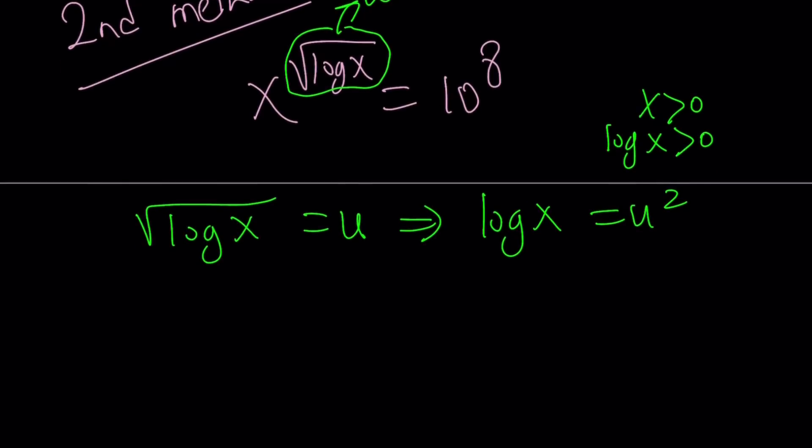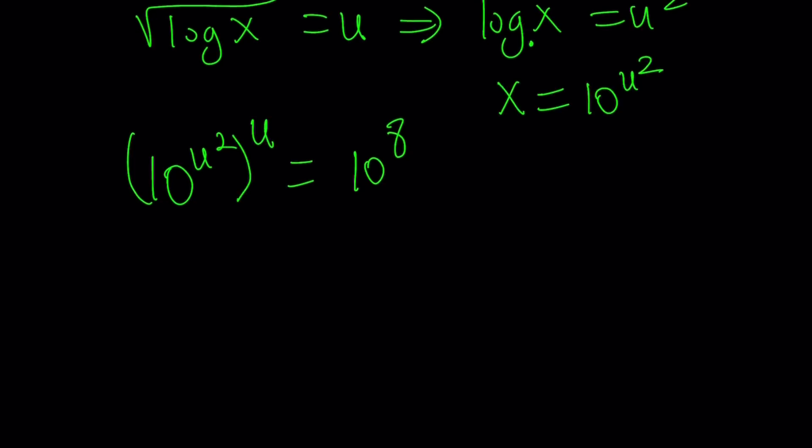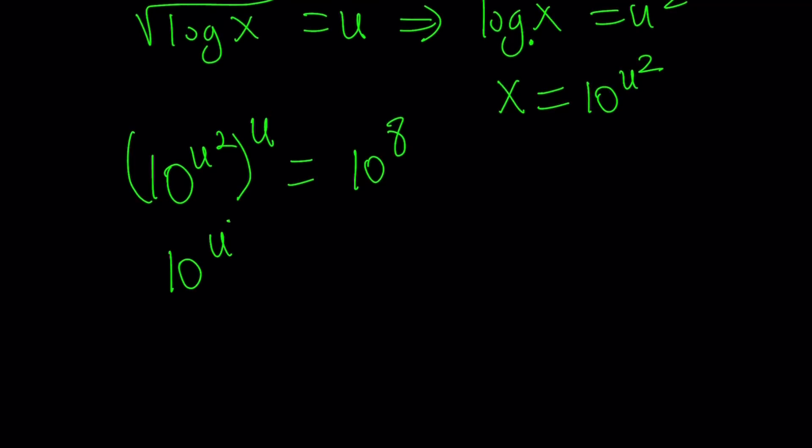Now, how do we solve for x, though? Well, you replace square root of log x with u. You got this. So what about x? By using the definition of logs again, x can be written as 10 to the power u squared. Now, let's go ahead and replace x with 10 to the power u squared and square root of log x with u and set it equal to 10 to the eighth power. And this gives us something real nice: 10 to the power u cubed equals 10 to the power 8, which implies u cubed equals 8, which implies u equals 2.